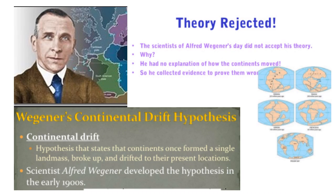Wegener's continental drift hypothesis was rejected by the scientific community at that time. The reason for his rejection is because Wegener had no explanation of how the continents move — which force is responsible for the movement of such huge land masses — so he collected the evidences to prove them wrong.